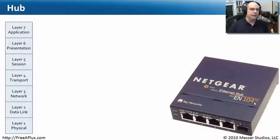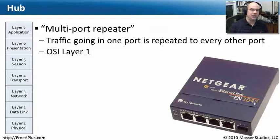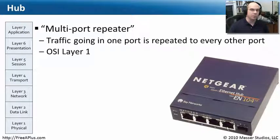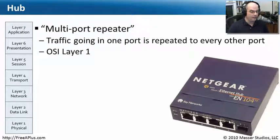When we first started doing Ethernet networks, we started using hubs to communicate. Hubs are essentially multi-port repeaters, which means if we send traffic into one of these ports, the job of this hub is pretty simple — it just retransmits that data out every other port. If this was a 32-port hub, we would put data in one port and it would transmit out the other 31 ports on that device.